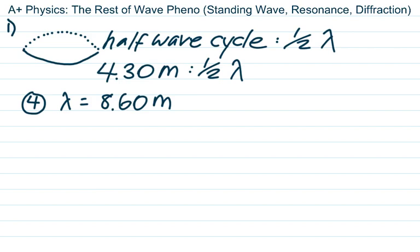Here's one key fact about standing waves in a string fixed on either end: from node to node — from one node to the next — is always half a wavelength. The distance between consecutive nodes is always lambda over two.